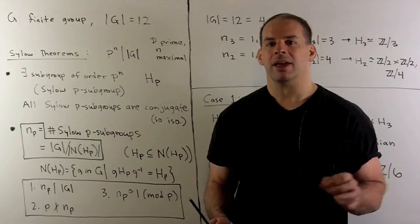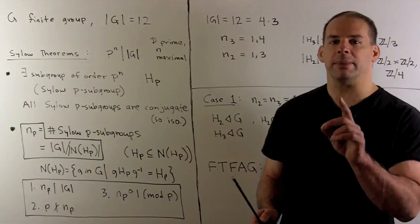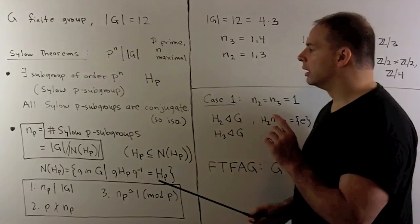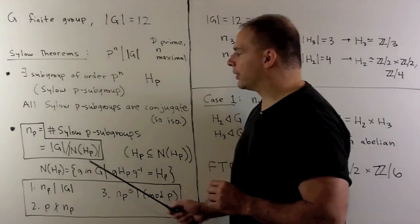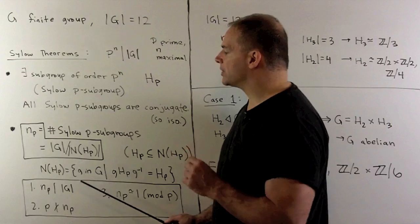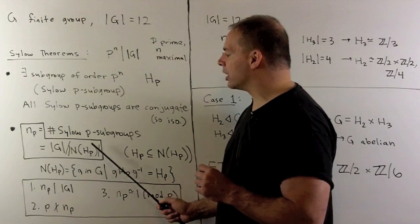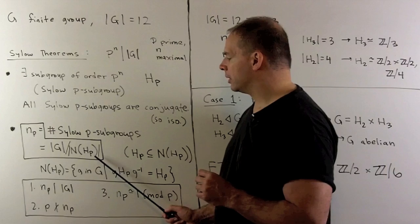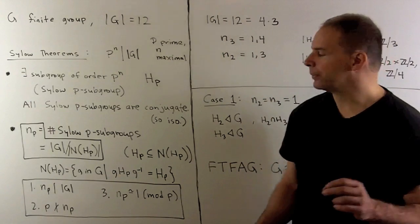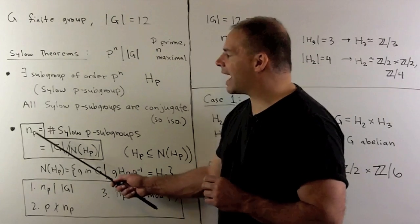If there's more than one, then all Sylow p-subgroups are conjugate to one another — that means they all have the same isomorphism type. If I want to count the number of Sylow p-subgroups, we denote the number by n sub p. The formula is given by the order of the group divided by the order of the normalizer of H sub p. Because H sub p is a subgroup of this normalizer, we're dividing by p to the n, so p does not divide n sub p.